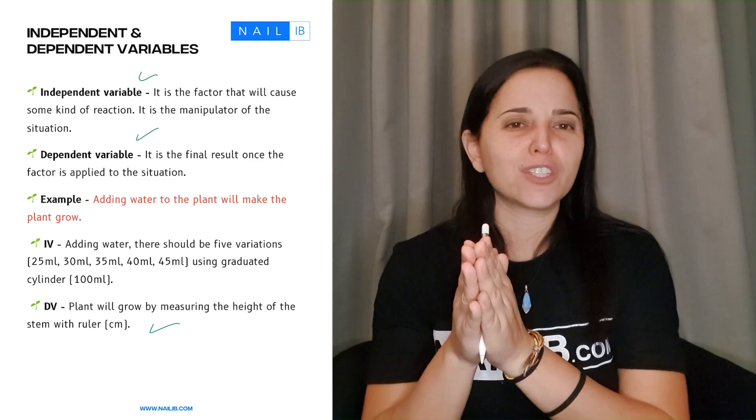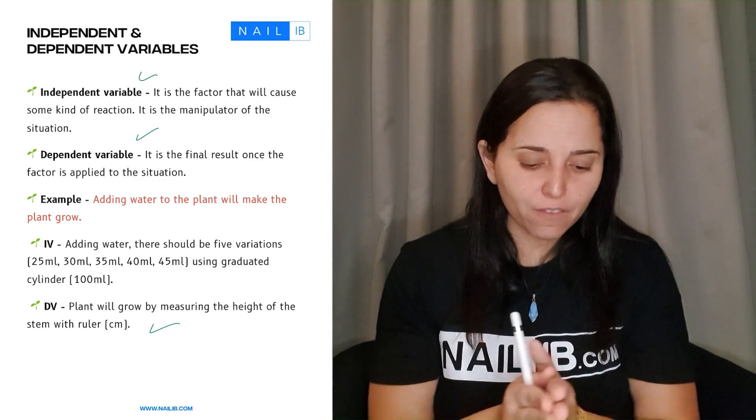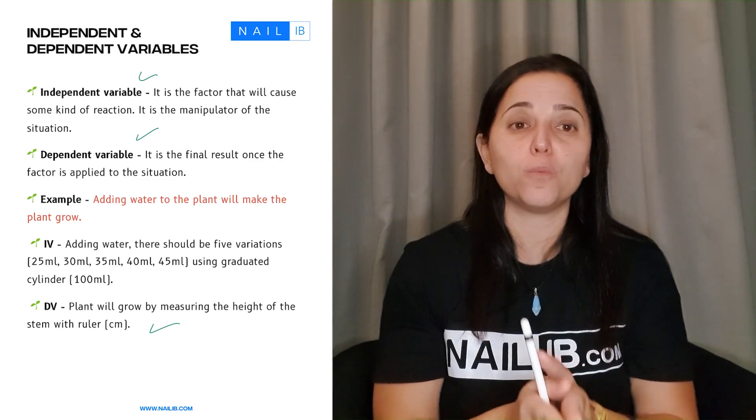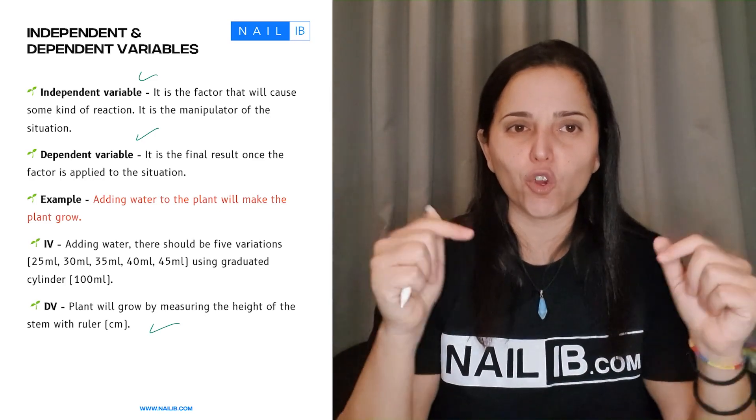Most importantly the numbers need to be there because that's how you're going to do all your graphing and all this stuff. So make sure that your dependent variable is measurable and all of these is extremely important that you put when you write this on your lab report.